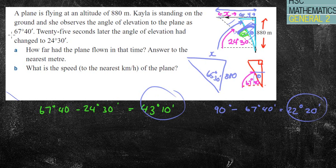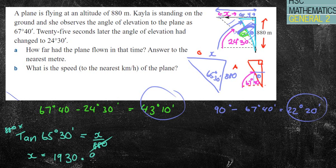We know that's 880 and that's X. We've got the side of opposite and adjacent, which is tan. So, we can do tan 65 degrees 30 minutes, equals our opposite over our adjacent. I'm going to move that 880 over by timesing it. So, X equals 880 times tan of my angle, and we get 1930.9837.